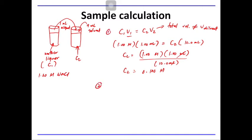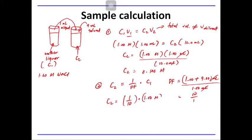The second formula that we can use is C2 equals 1 over DF times C1. DF is basically dilution factor, volume of aliquot plus volume of diluent over volume of aliquot. So C2 is basically 1 over 10 times C1 is 1 molar. So the final answer is 0.100 molar.